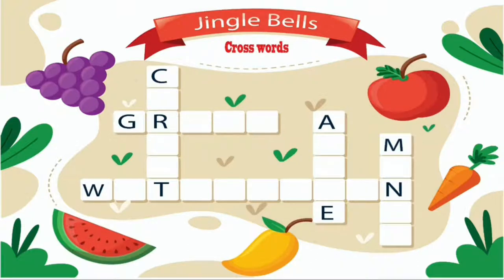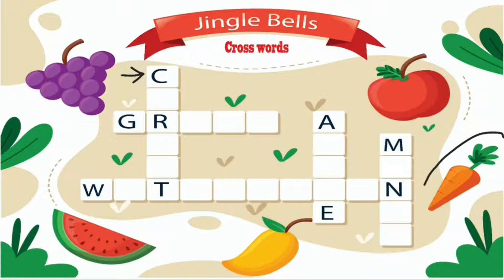This vegetable starts with the letter C. Children, which one in this picture is an orange color vegetable? It is the favorite food of a bunny — yes, a rabbit. The favorite food of a rabbit is carrot. The spelling of carrot is C-A-R-R-O-T. Carrot.